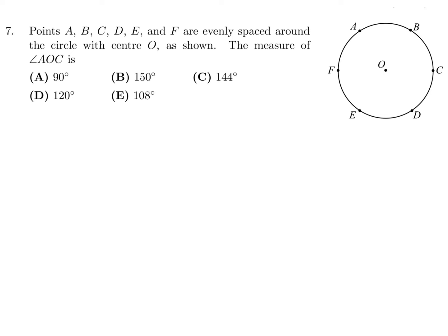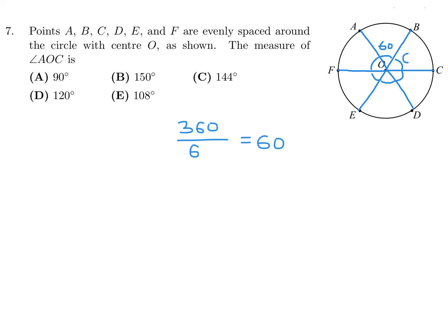Question number 7. Points A through F are evenly spaced around the circle with center O. The measure of angle AOC. Since they're evenly spaced, all internal angles are equal. The entire circle is 360 degrees divided among 6 points, so each section is 60 degrees. Angle AOC spans from A to O to C — that's 2 times 60, which is 120 degrees. Number 7, the answer is D.